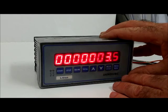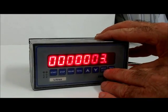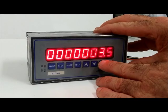Next function. Relay 1 set point. The digit flashing is the one that can be changed.